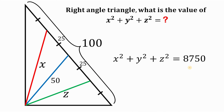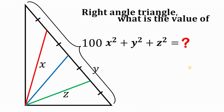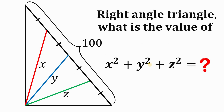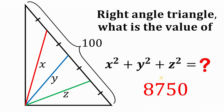Therefore, the answer to this question — what is the value of x squared plus y squared plus z squared — is 8,750. And as always, we are done.